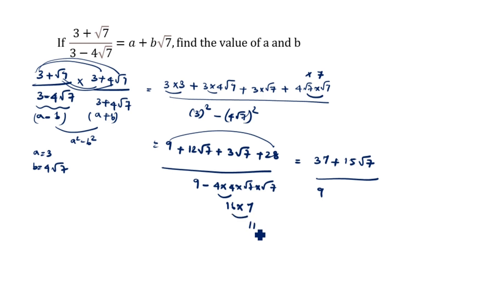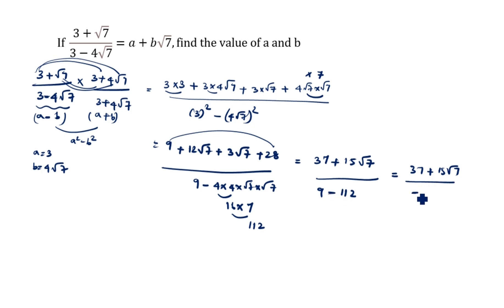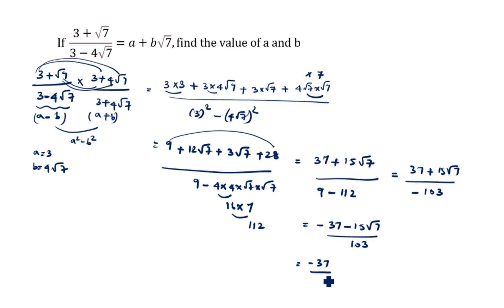16 into 7 is 112, so the denominator is 9 minus 112, which equals negative 103. Therefore we have 37 plus 15 root 7 divided by negative 103, which gives minus 37 minus 15 root 7 divided by 103. Splitting: minus 37 by 103 minus 15 by 103 root 7.